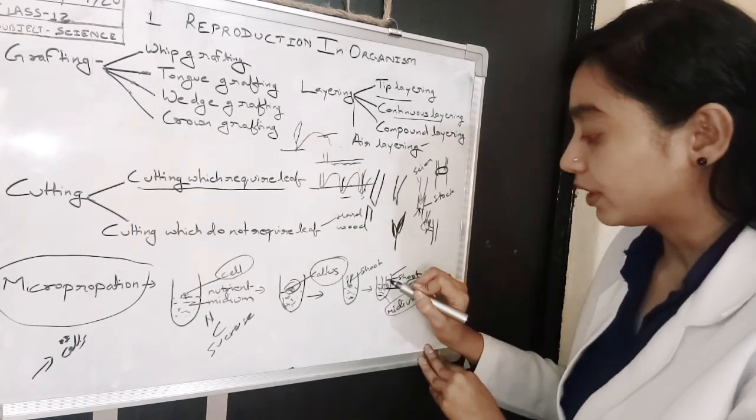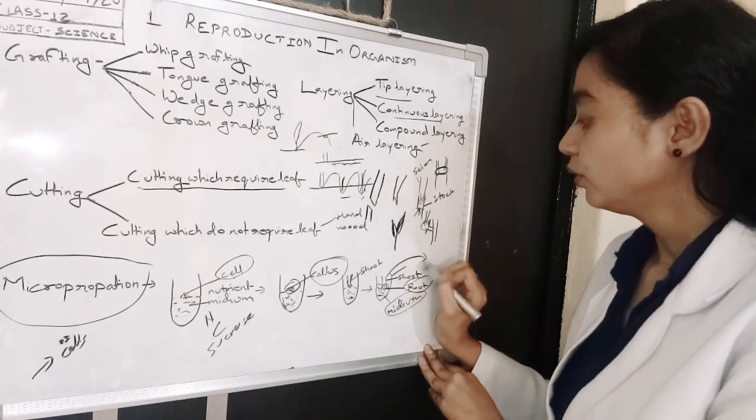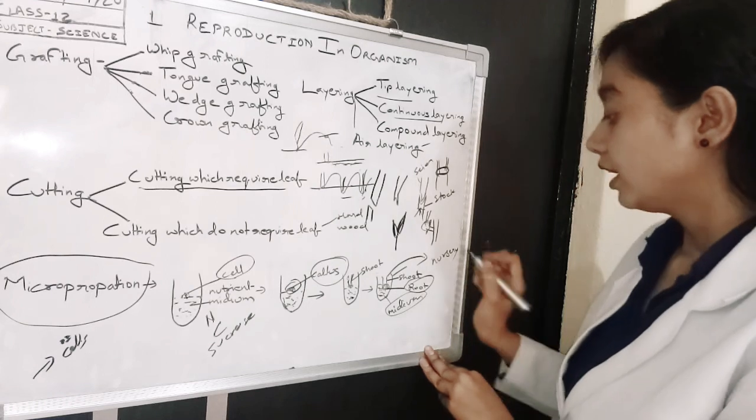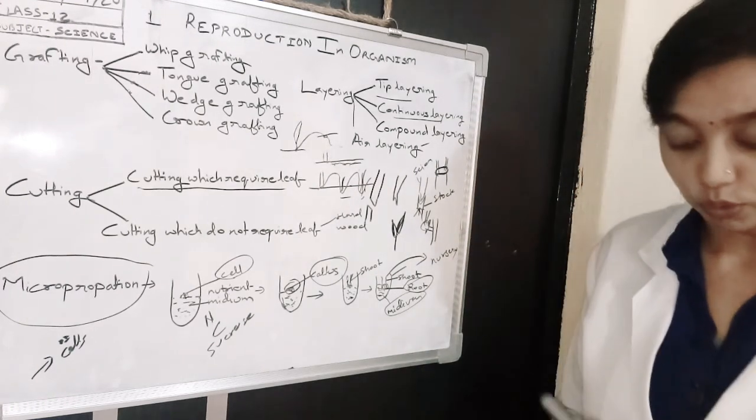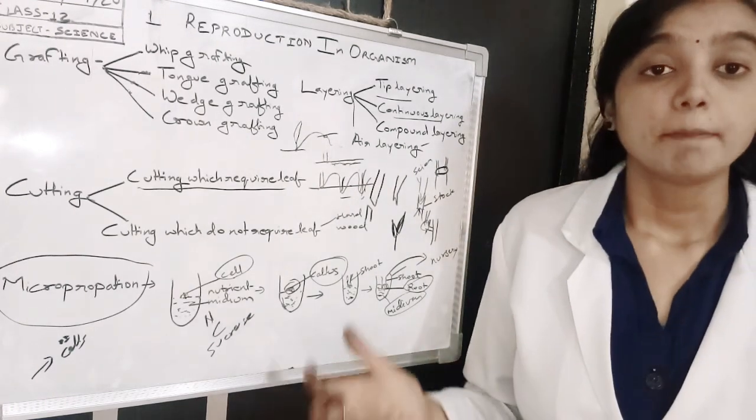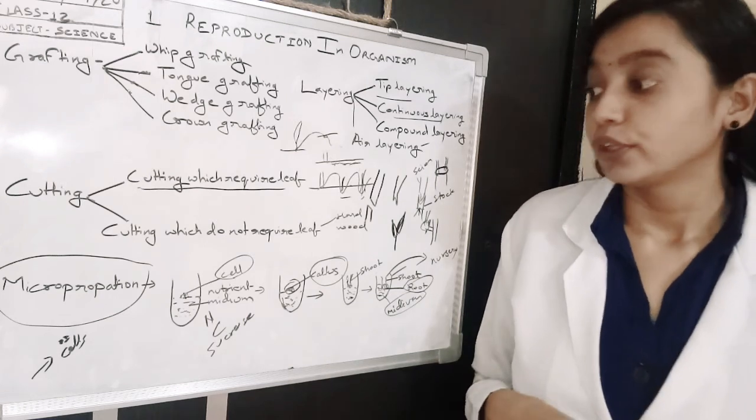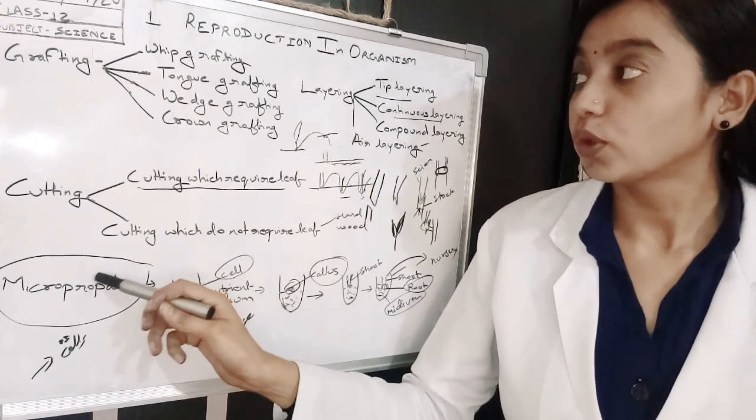After a little bit of growth, we grow such plants in a nursery, so that we can grow a large amount of plants with desired characteristics for our benefit. This is micropropagation.